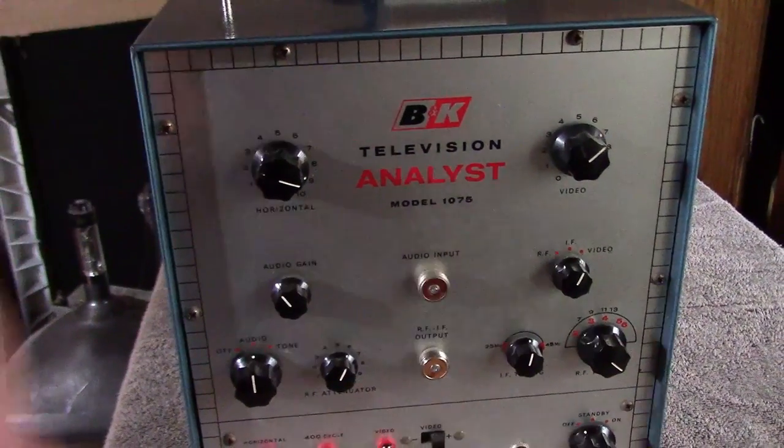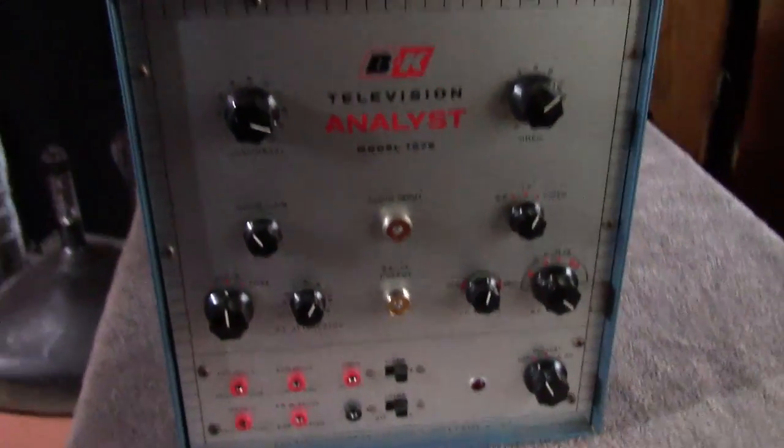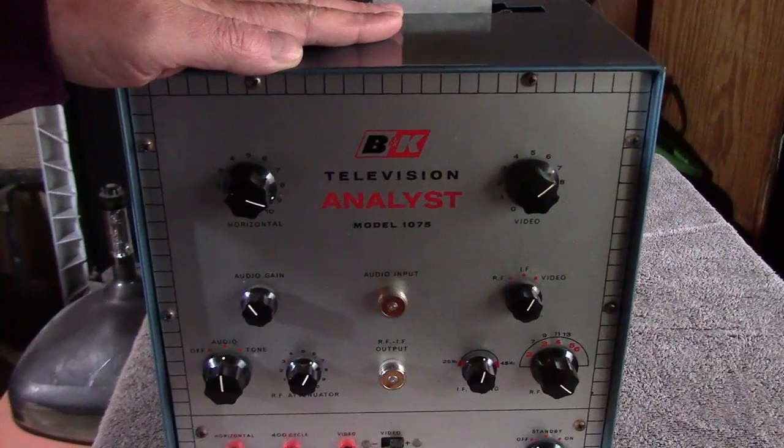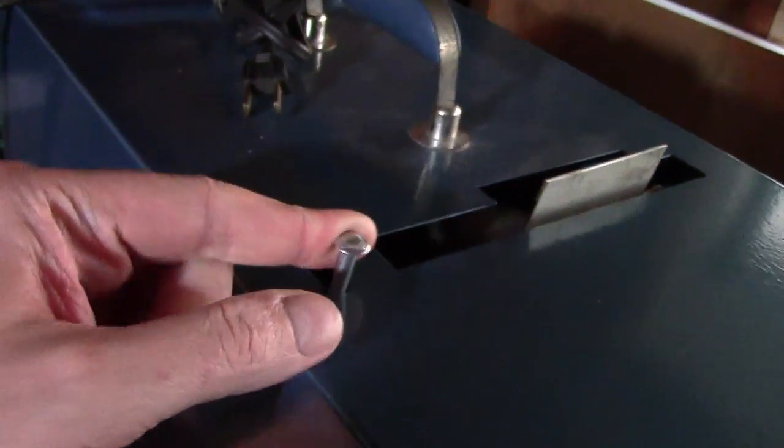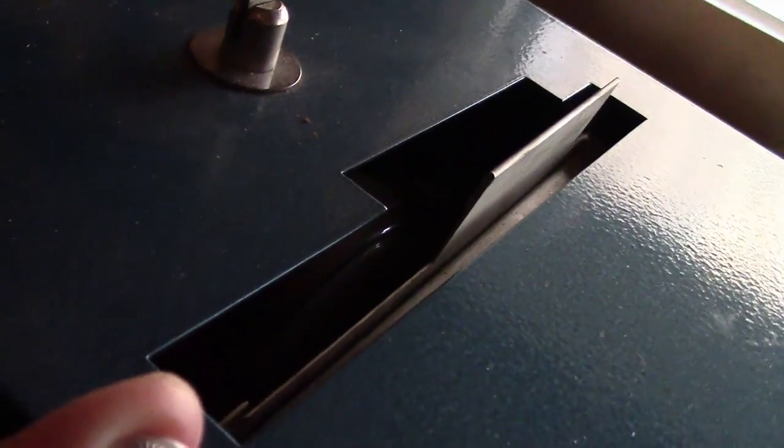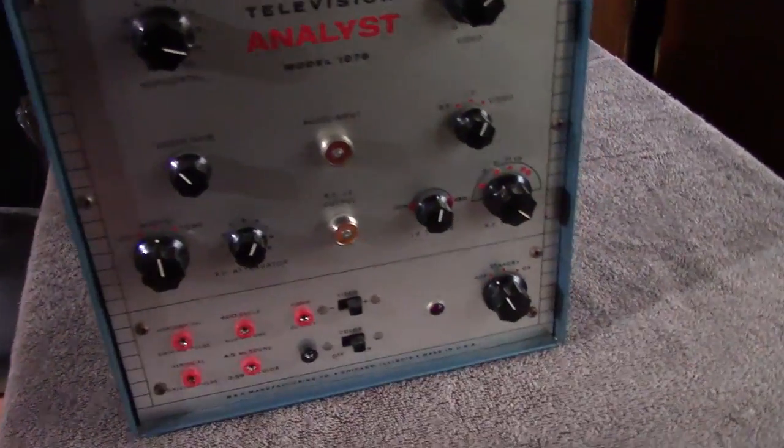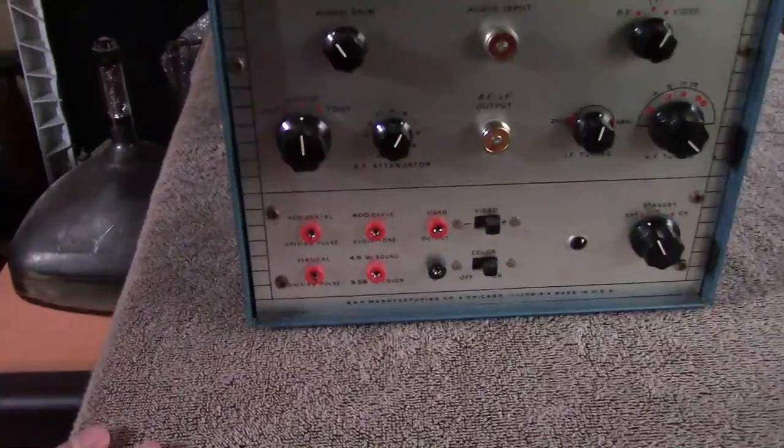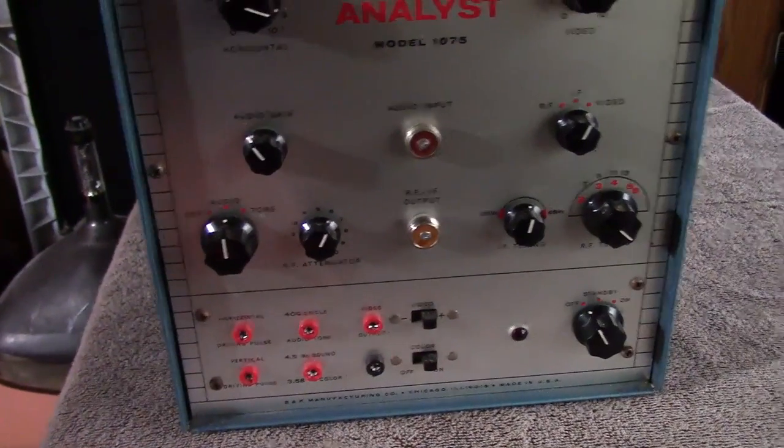Anyway, this is a much more primitive version of the 1077B which is new enough to actually be partially solid state. Like the 1077B, this has a flying spot scanner inside of it and you can put transparencies down inside of it here. You can see the CRT poking through there and it will take whatever's on that transparency, scan it, modulate it, and output it on VHF channels so you can use it for a test pattern generator. You can do a bunch of other things too, like generate drive signals.